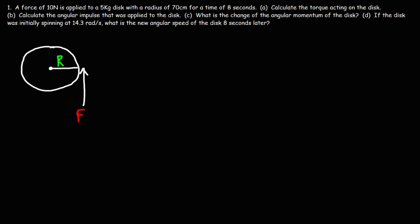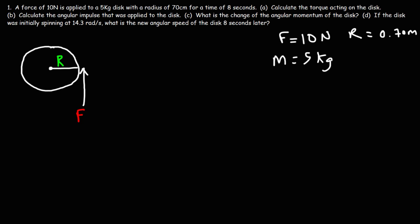Let's make a list of what we know. The value of the force is 10 newtons. The radius of the disc is 70 centimeters. To convert that to meters, divide by 100 — there are 100 centimeters in 1 meter, so this is 0.70 meters. The mass of the disc is 5 kilograms, and the time at which the force is applied is 8 seconds.